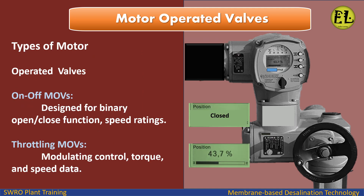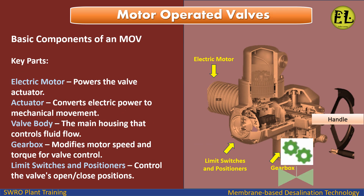Types of Motor Operated Valves: On/Off MOVs are designed for binary open/close function with specific speed ratings. Throttling MOVs provide modulating control with torque and speed data.